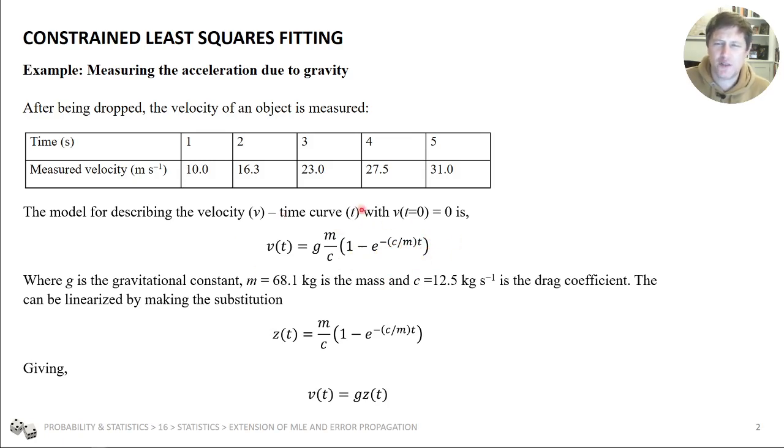So this is an equation for how the object's speed changes, how it increases and then starts to plateau towards the terminal velocity as it's falling through the air. And this is something that you can work out from the physics of the problem. The force is due to gravity and the resistance due to drag.